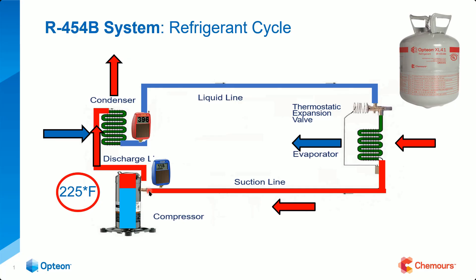The number one reason for overheat is high compression ratio — which basically means you either have high head pressure, low suction pressure, or the combination of both. We'll get into that topic on another day. But we're coming through here rejecting heat — and we're rejecting a lot of it: the heat from the load, the superheat, the heat from the motor, and the heat of compression.